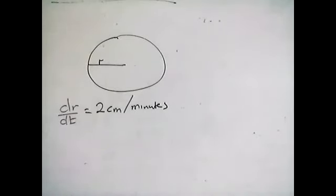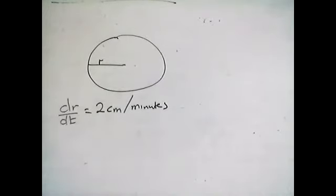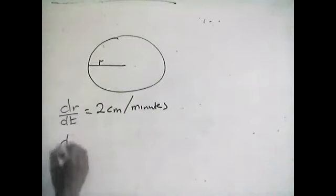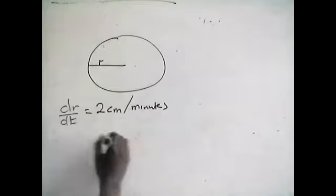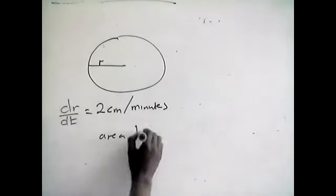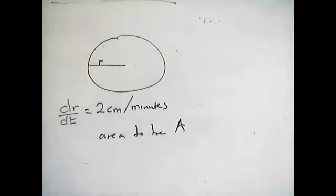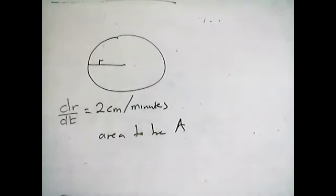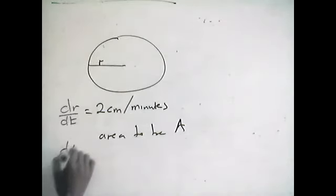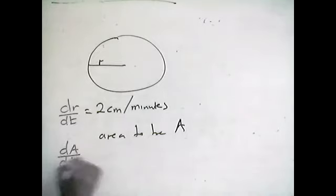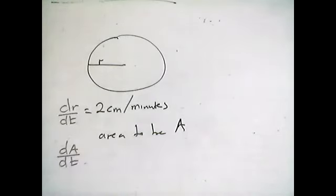Now we're going to find the rate of change of the area. If the rate of change of the radius is given, now they want us to find the rate of change of the area. So if we let area be A, the question is asking for the change in area over the change in time — dA over dT.